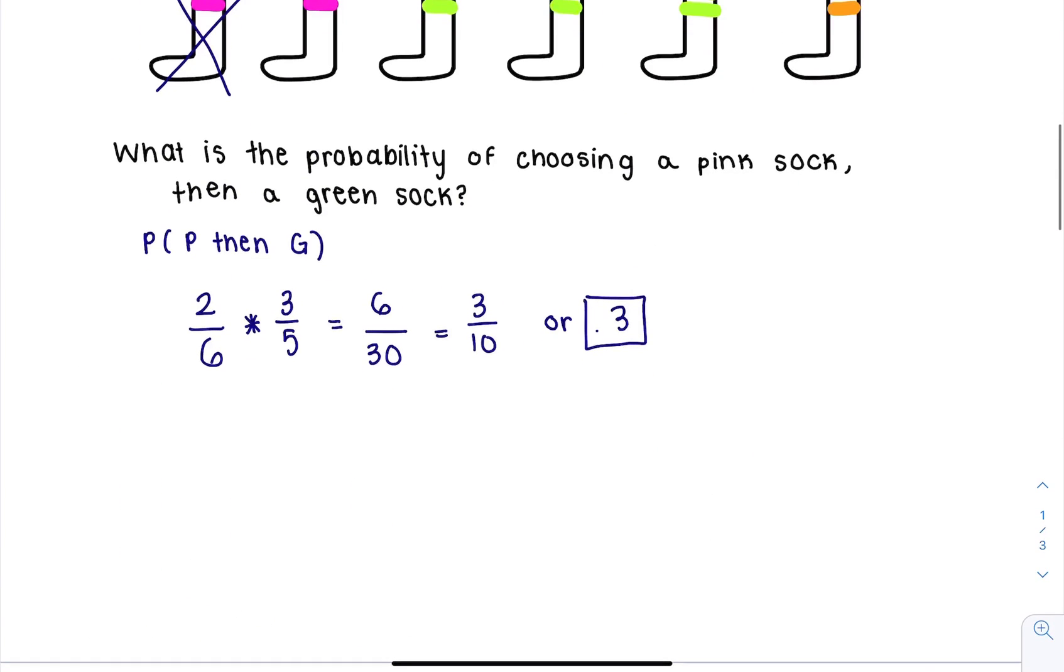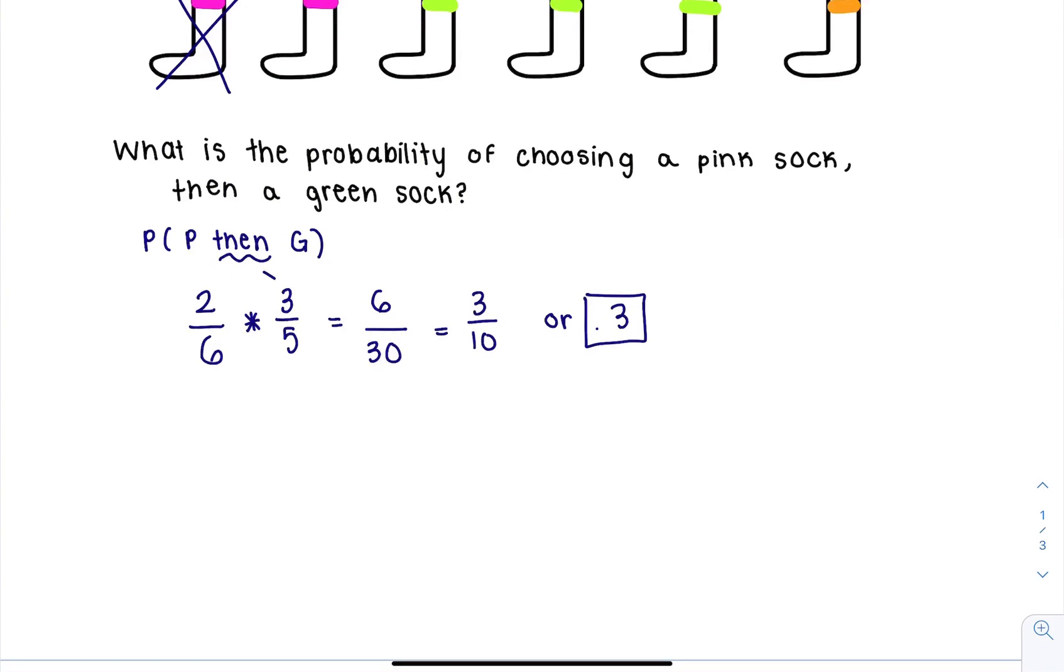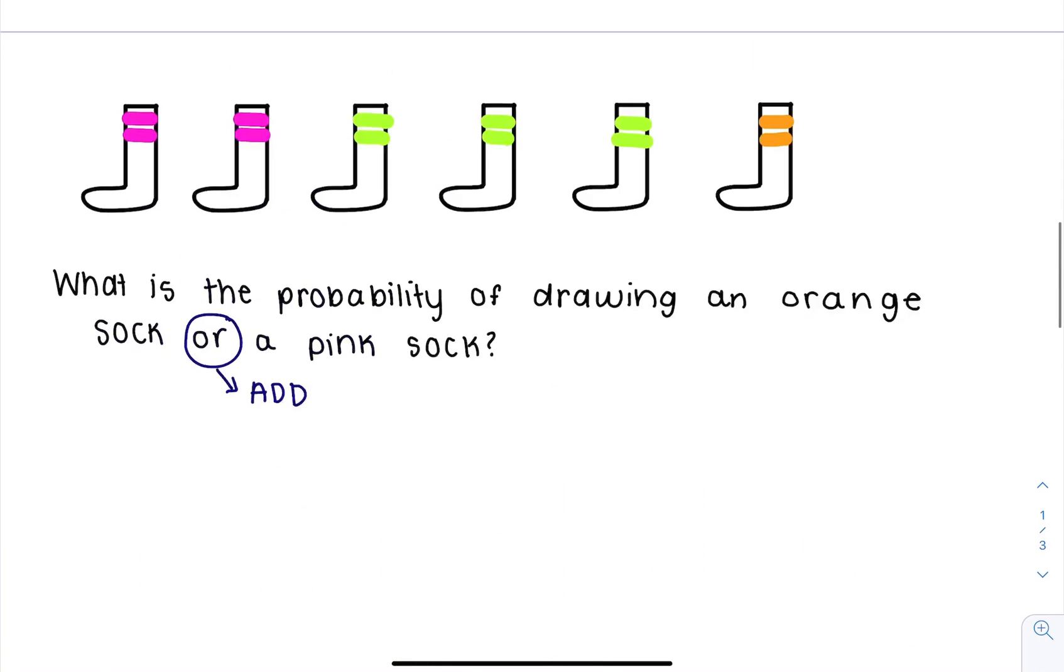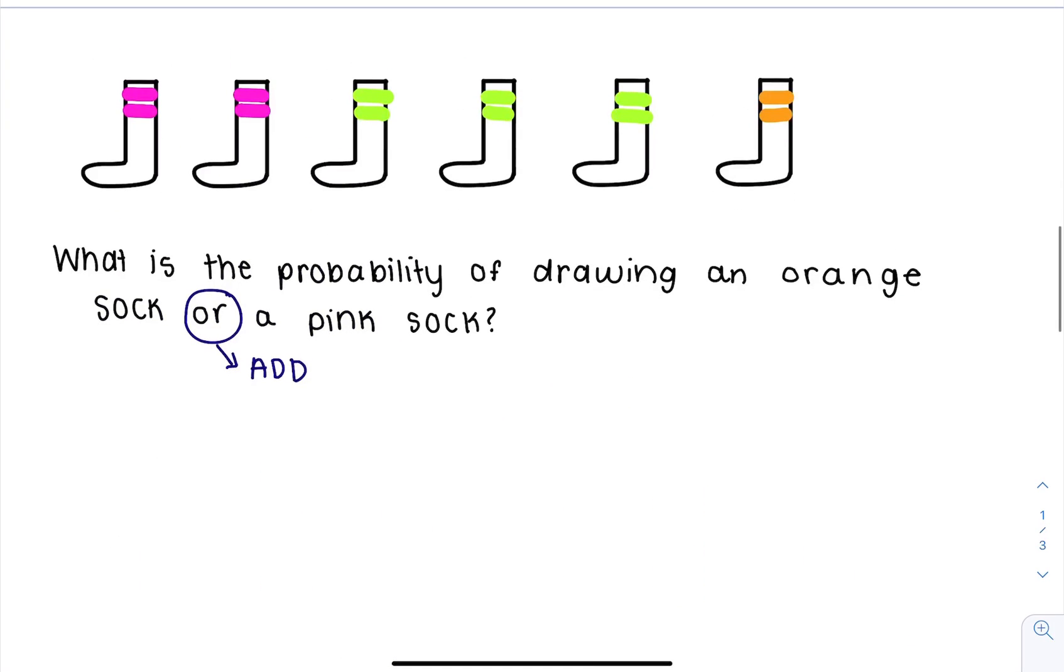So before, we had THEN, so we were multiplying. Now that we have ADD, what we're going to do is first let's draw, we could think we could draw an orange sock or we could draw a pink sock. So what we're going to do for an orange sock is that is 1 out of 6.